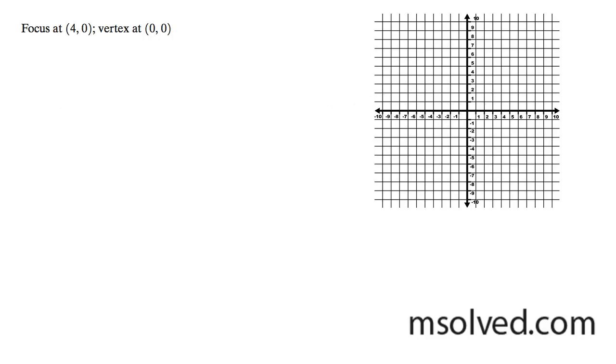There's my cursor. So we're right here. This is where the vertex is at 0, 0. Focus is at 4, 0. And because of this, this means it's in this form.